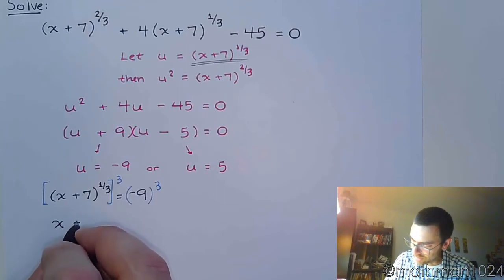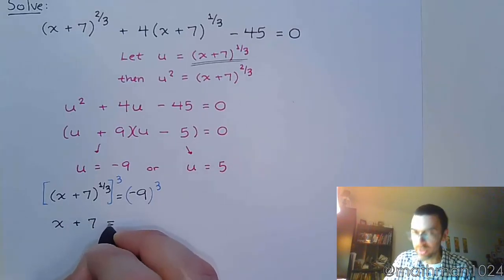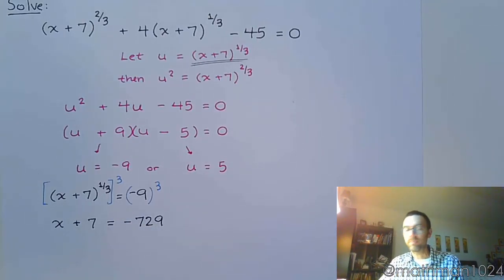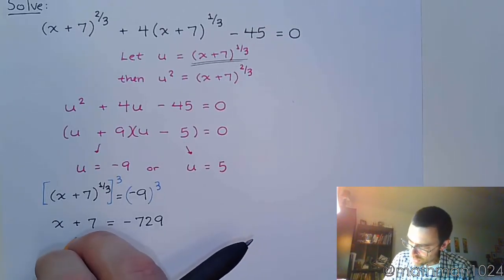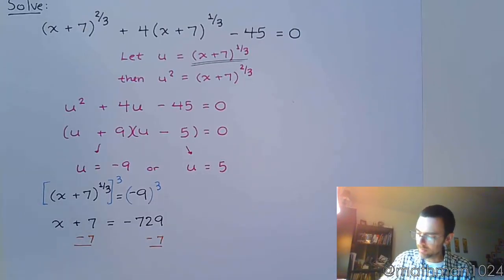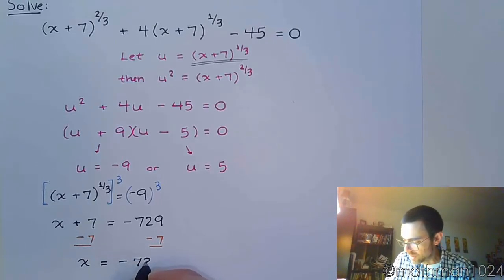So we have x plus 7. When you cube negative 9, we end up with negative 729. And it's just a small little step to finish getting x by itself. So x is equal to negative 736.